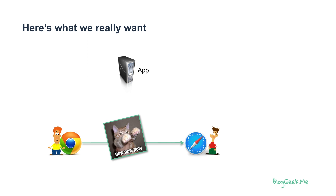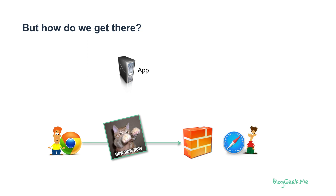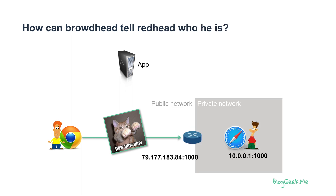So here's what we want to do. We want to take media directly from our Redhead on the left and send it to Brownhead on the right. In order to do that, we need to be able to traverse through the firewall that Brownhead is behind. Brownhead is inside a private network — his local IP address is, for example, 10.0.0.1.